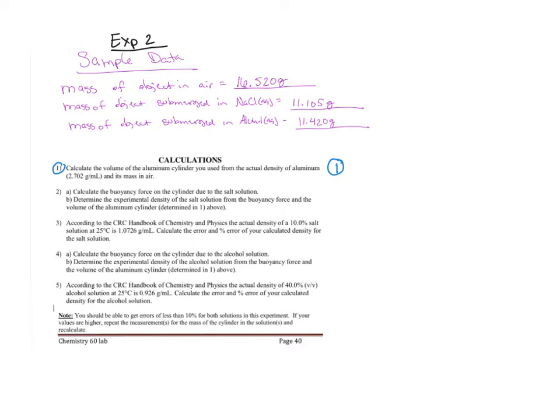Question one: calculate the volume of the aluminum cylinder used from the actual density of aluminum and its mass in air. My mass in air is 16.520 grams. The density is 2.702 grams per milliliter, which is the same as 2.702 grams for every one milliliter. I write that as a conversion factor. I need my units of grams downstairs to cancel, so 2.702 grams for every one milliliter.